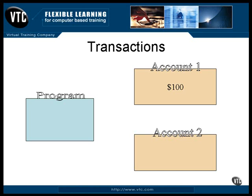This is the classic example of a simple transfer of money from one account to another. It consists of two discrete operations, and no matter how you do them, there is a moment of vulnerability. For example, say you take the money out of account one, and your next step is to put it into account two, but the system crashes instead.